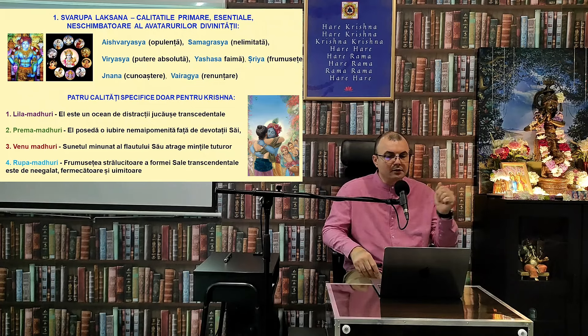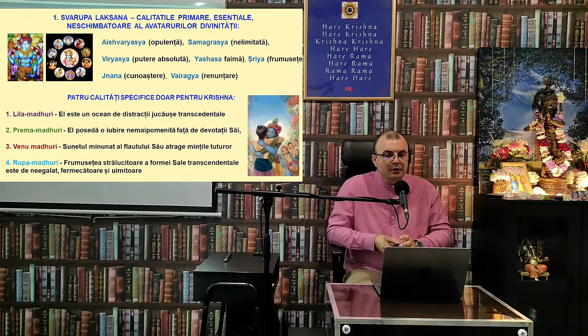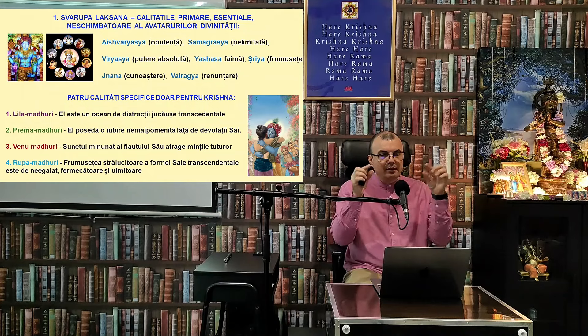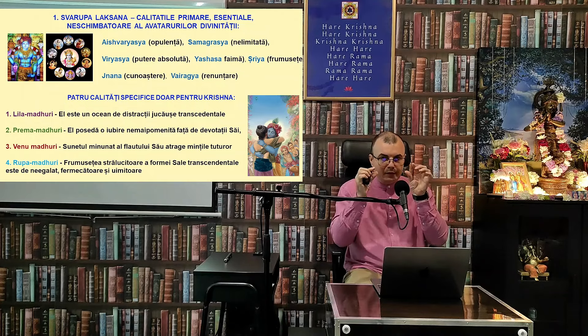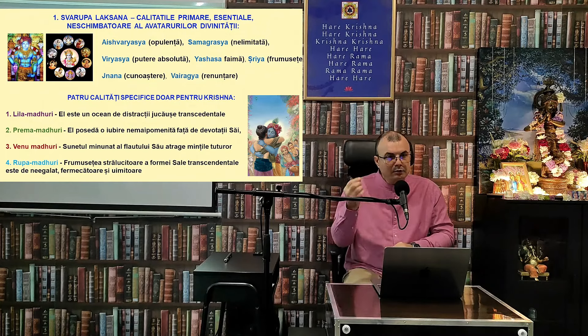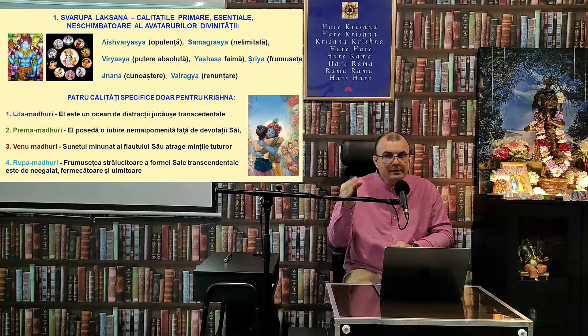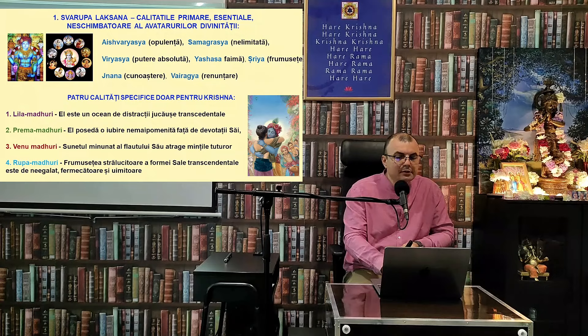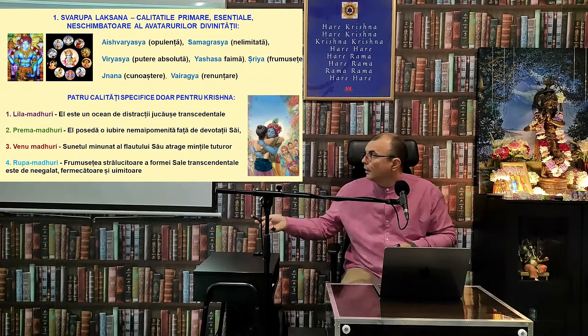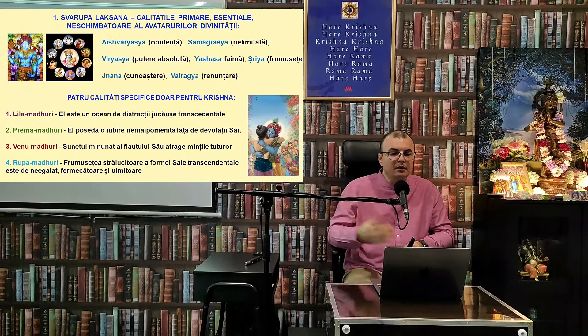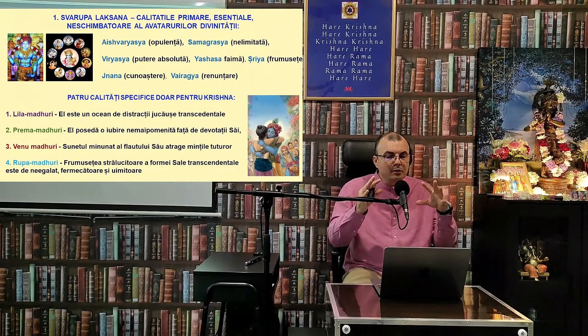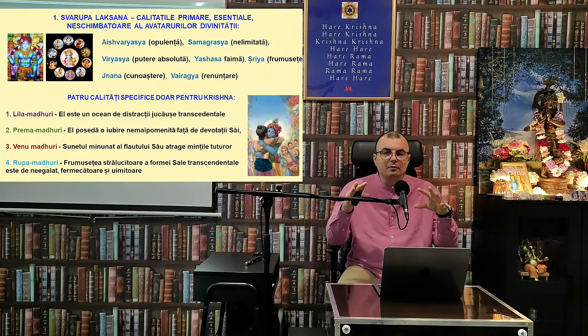Vedele descriu că Persoana Supremă, sursa avatarilor, posedă patru calități primare personale care nu sunt regăsite în celelalte avataruri. Prima este Lila Madhuri — el este un ocean de distracție jucăușă transcendentală, uimitoare. Vedele descriu că Rasa Lila este cea mai fascinantă.